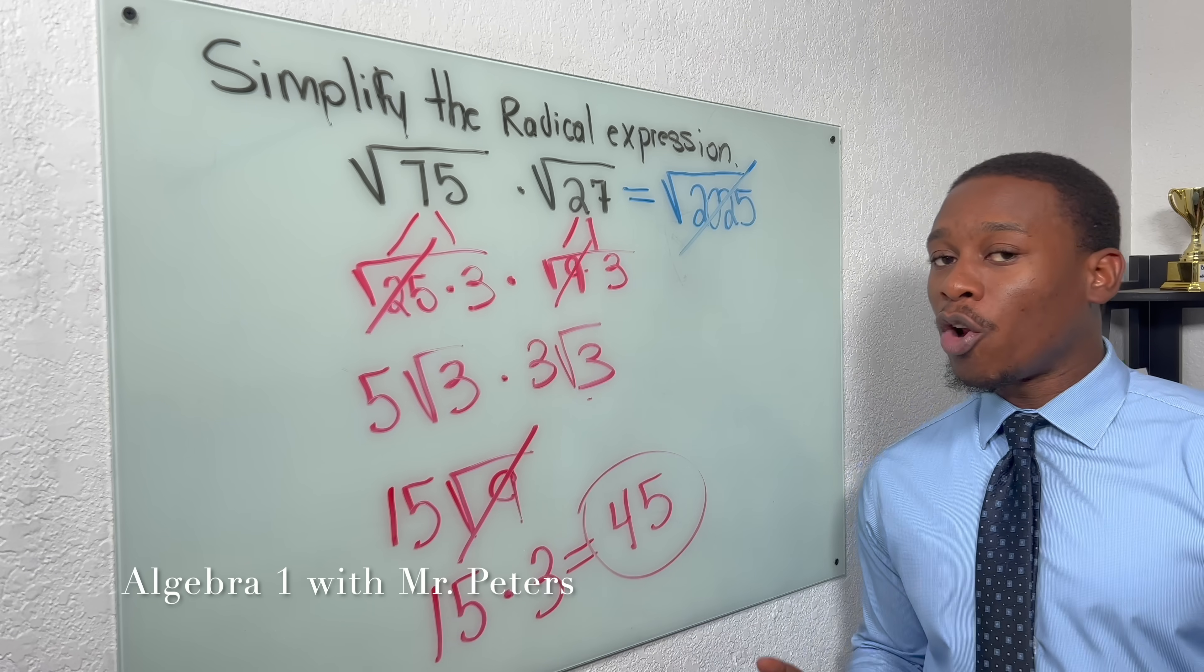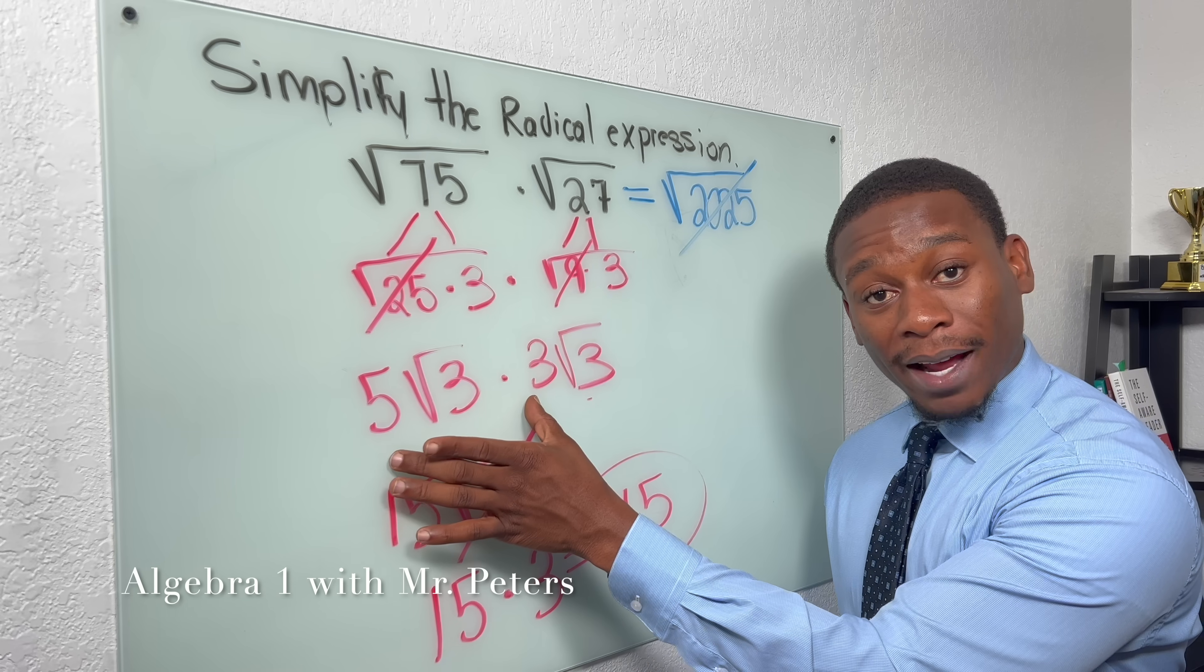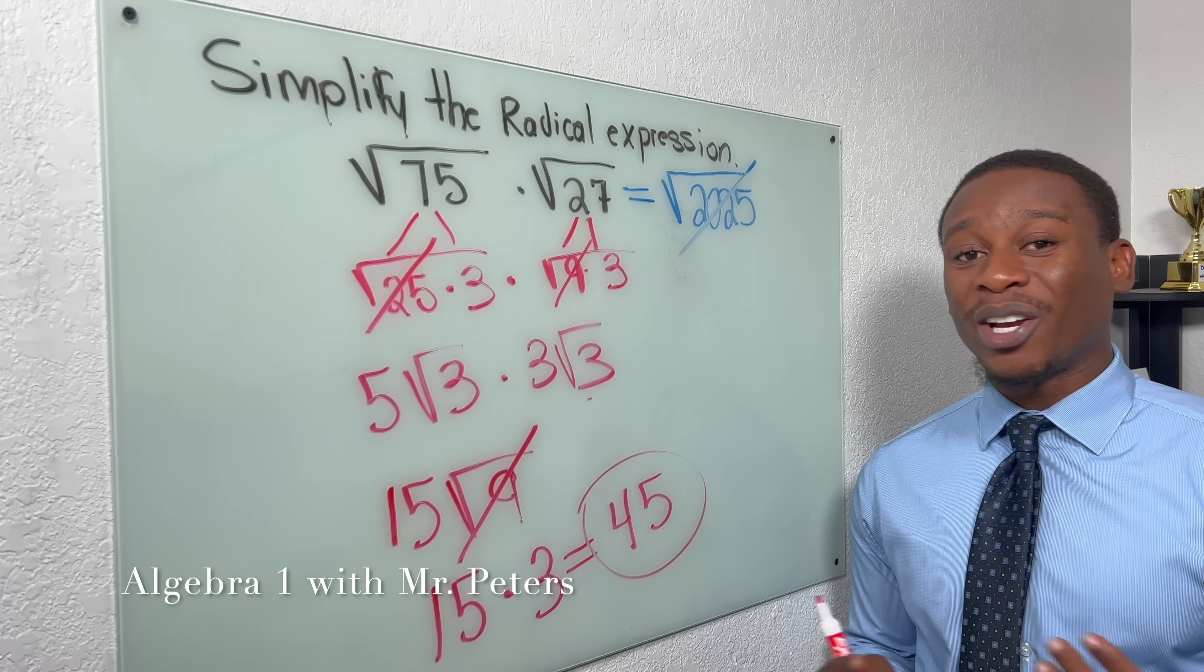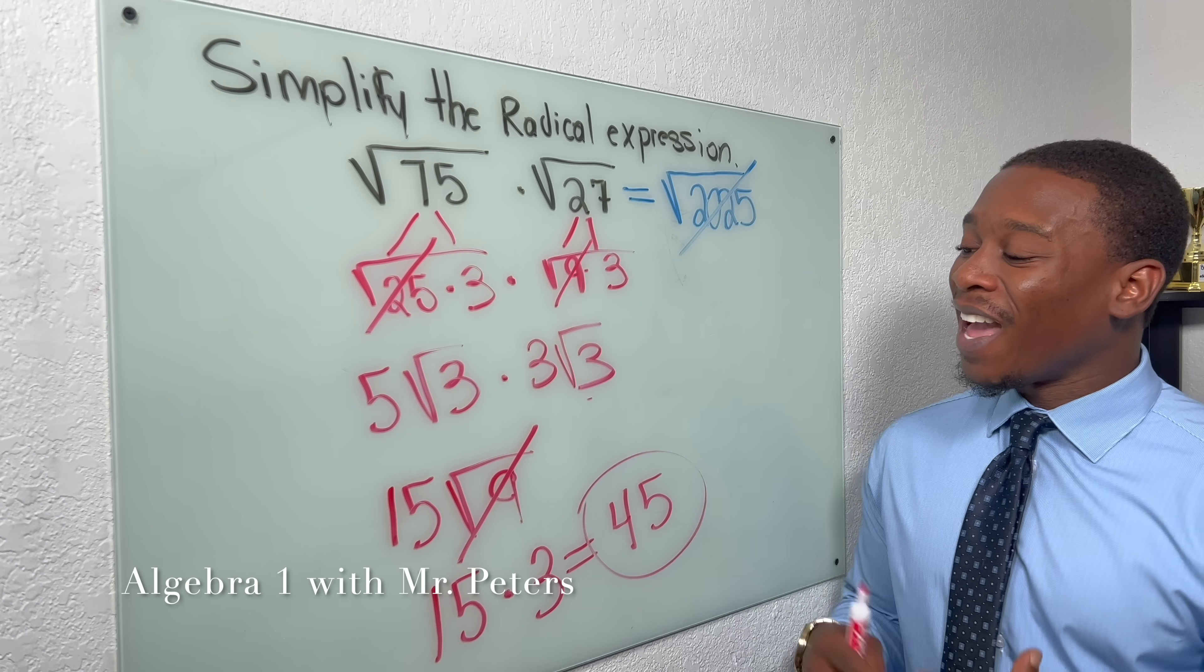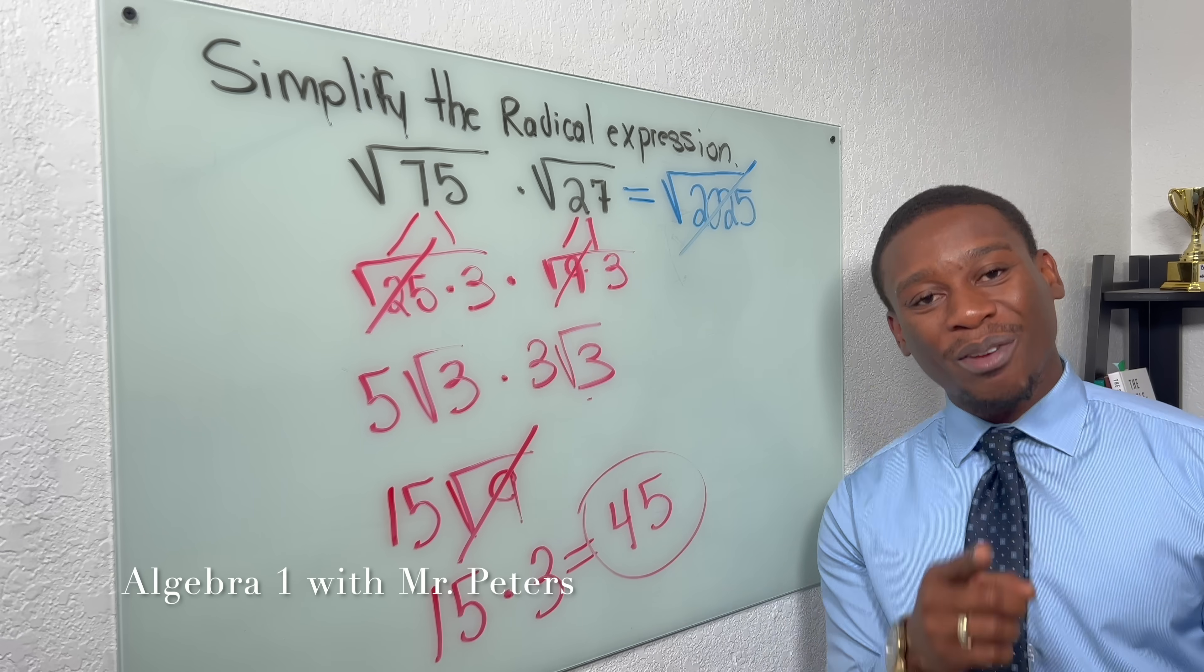So please, guys, I know when we're adding radicals, the radicals stay the same when we add, just the coefficients. But this is multiplying. So we're going to multiply coefficients with coefficients, and then radicals with radicals, and then simplify the radical if possible.